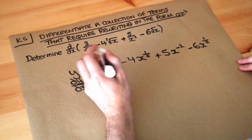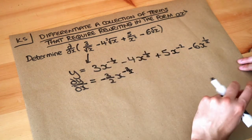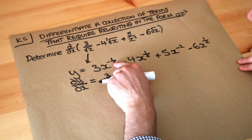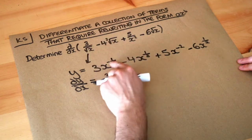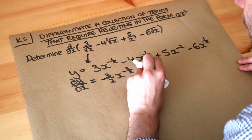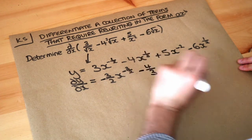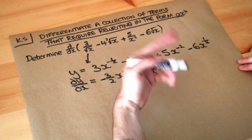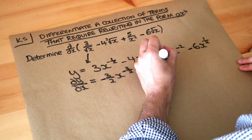...minus half reduced by 1 gives minus 3 over 2. If you find it difficult to subtract 1 from a fraction, imagine it as minus half minus 2 halves, since 1 equals 2 halves — giving minus 3 halves. For the second term, multiply minus 4 by a third to get minus 4 thirds, then reduce the index: 1 third minus 1 is 1 third minus 3 thirds, which is minus 2 thirds.